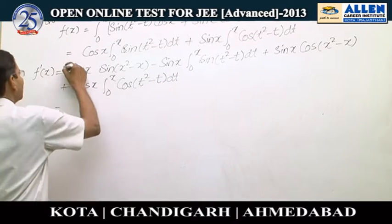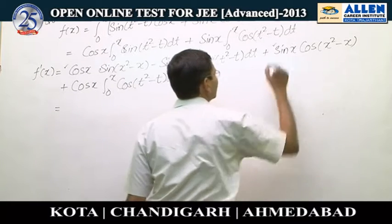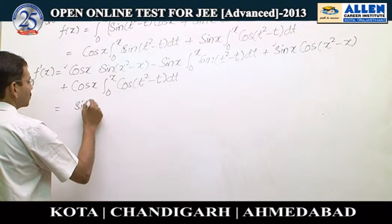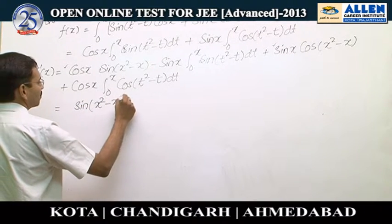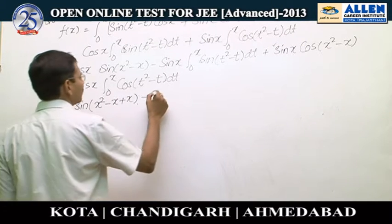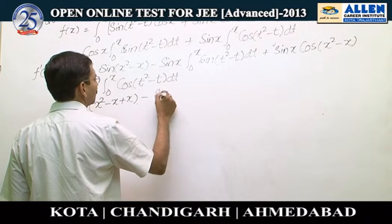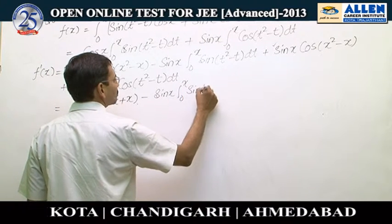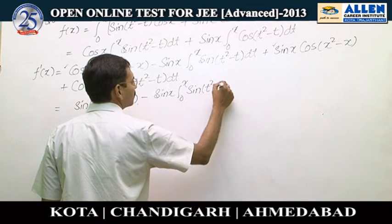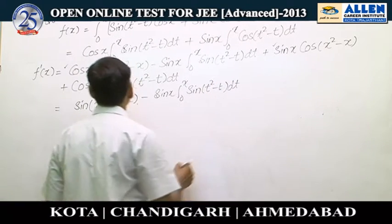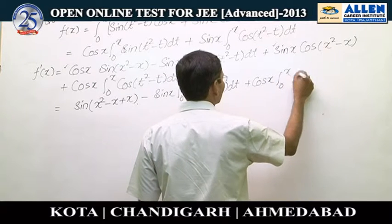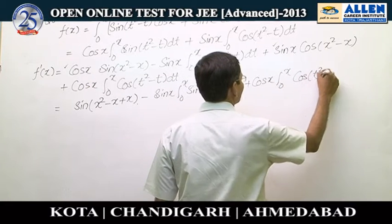We can compile the first and third terms using the formula sin(a)cos(b) + cos(a)sin(b), which makes it sin(x² - x + x). The remaining terms are: -sin(x)·∫₀ˣ sin(t² - t) dt + cos(x)·∫₀ˣ cos(t² - t) dt.